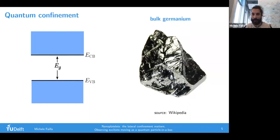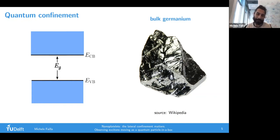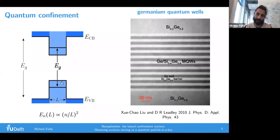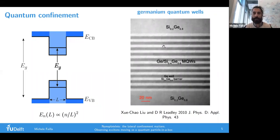Let me briefly discuss quantum confinement. I'm showing a piece of bulk germanium, and on the left part of the slide is a scheme of the valence band and conduction band separated by the energy gap. What happens is that as soon as I make germanium or any material quite small and surround it with a material which has a higher energy gap, the energy gap actually increases, inversely proportional to the square of the size. Here is a picture of multiple germanium quantum wires - the dark ones - separated by a SiGe interlayer. That's quantum confinement.